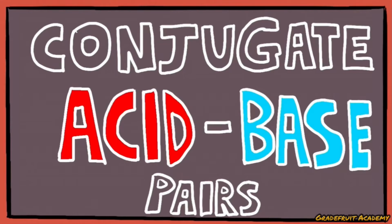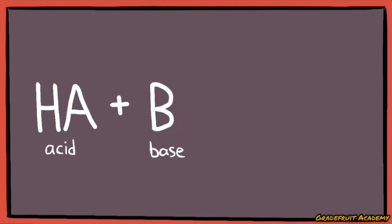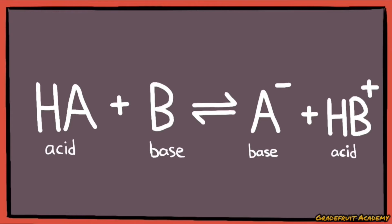According to the Bronsted-Lowry definition, when an acid reacts with a base, the acid donates a hydrogen ion, aka a proton, to the base, forming A- which becomes a base and HB+, which becomes an acid.